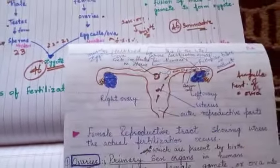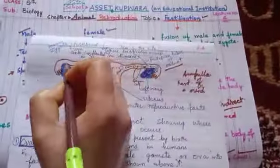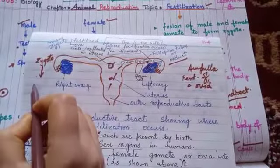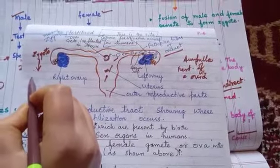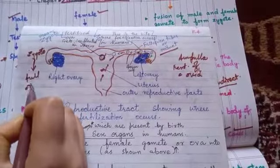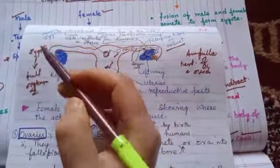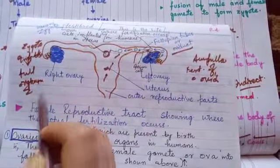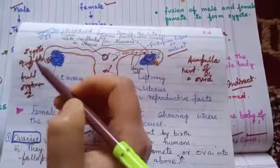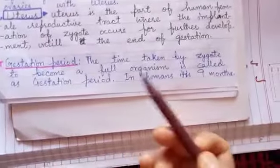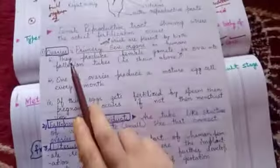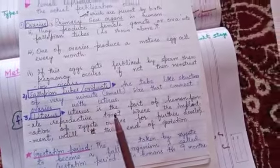In the period of nine months, the embryo remains inside the womb. The period from when the zygote begins development until it becomes a full organism in humans takes nine months. This time period is called the gestation period — the time taken by a zygote to become a full organism. In humans, the gestation period is nine months. The main organs are the ovaries, the fallopian tubes, and the uterus.